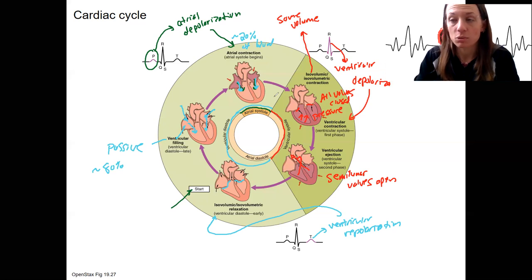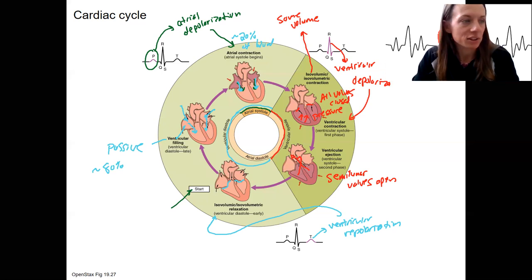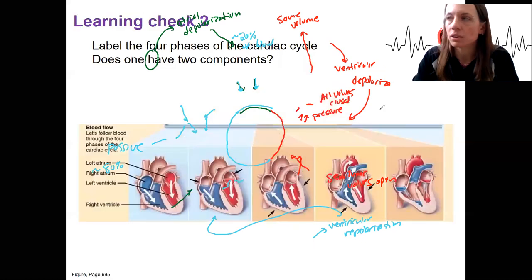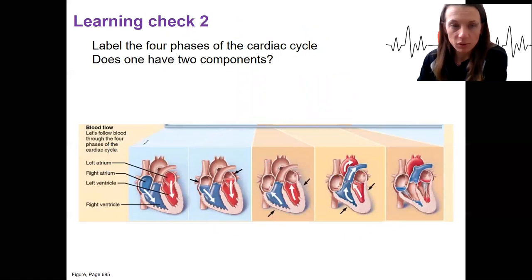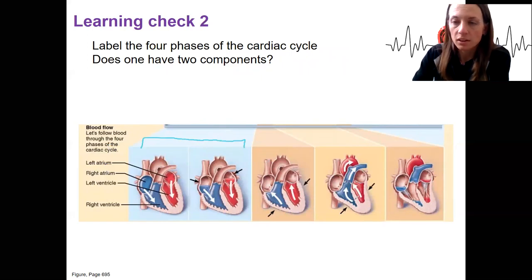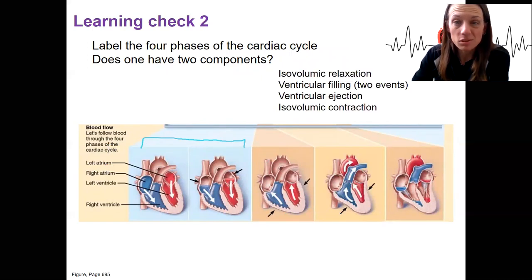Then you start over again and walk through this yourself. Let's do this as a learning check — label the four phases of the cardiac cycle shown here. One of them has two components. Here are the names of the phases and the one that has two events to help if you need it.